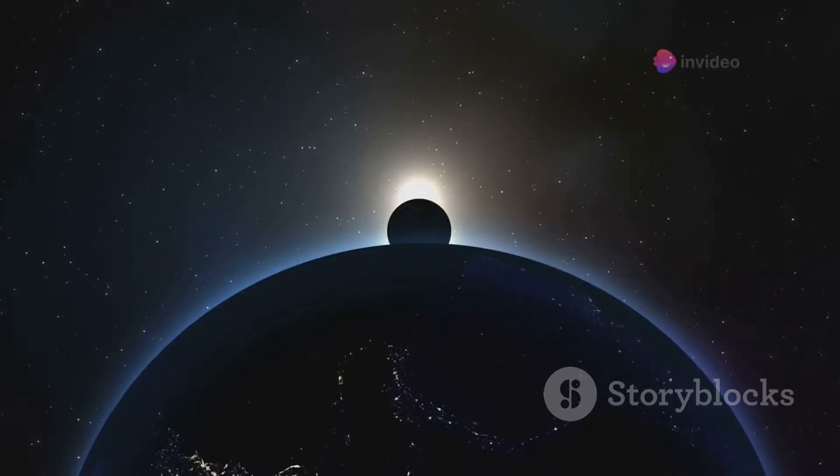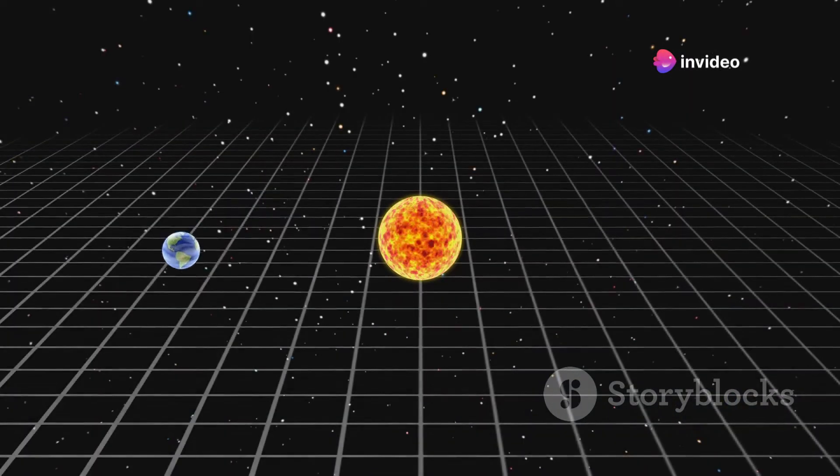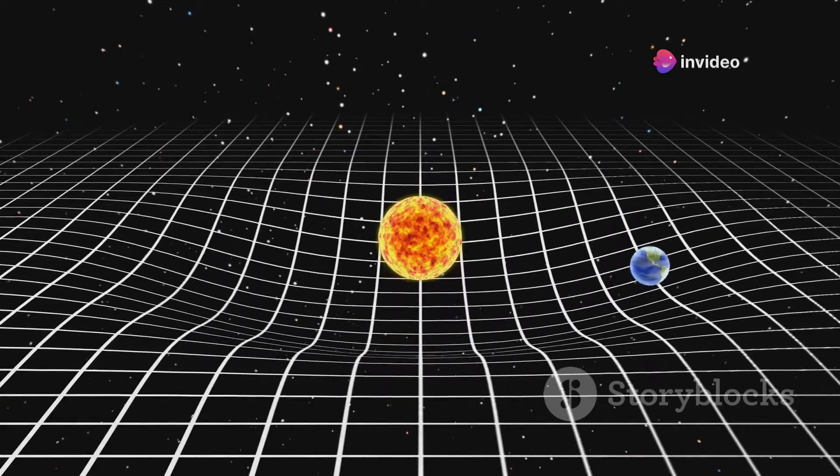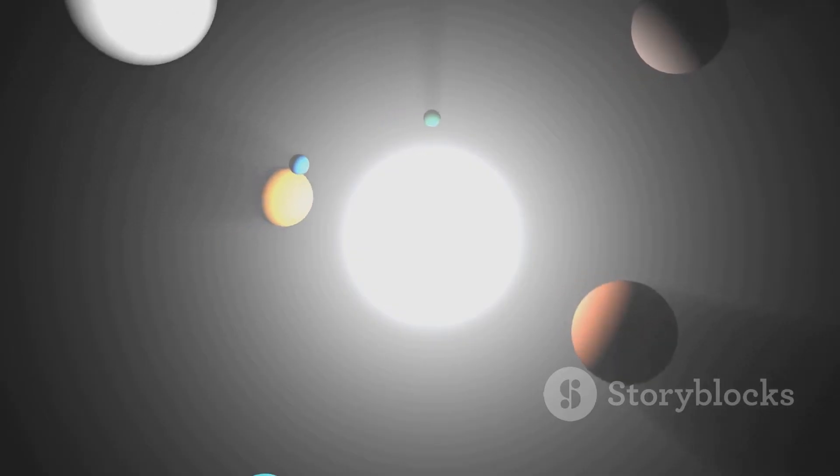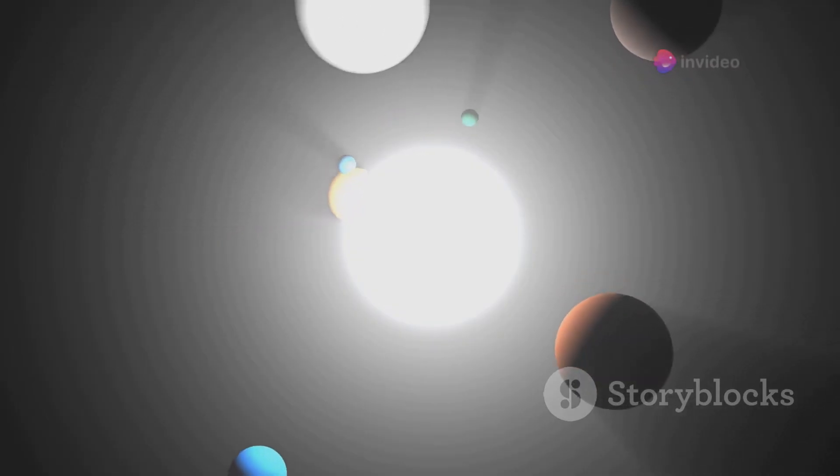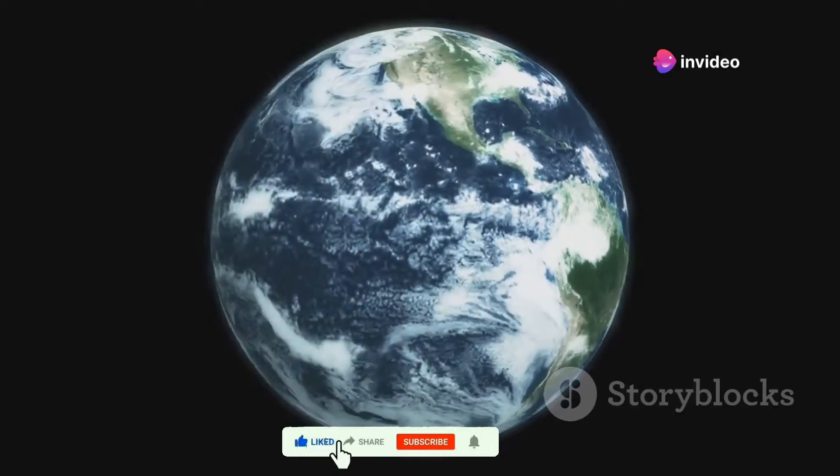Imagine for a moment that Earth's size matched that of the Sun. This isn't just about Earth becoming a giant ball in space, it's about an exponential increase in mass. Since gravity depends directly on mass, a bigger Earth means a much stronger gravitational pull. Now, let's dive deeper into how this amplified gravity would play out.